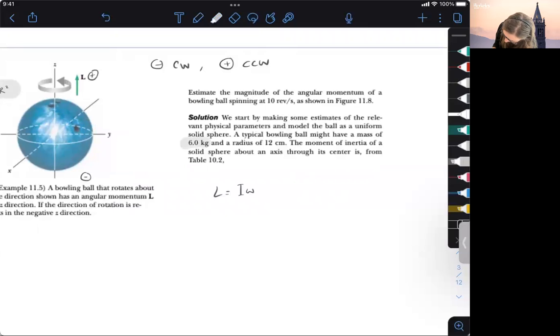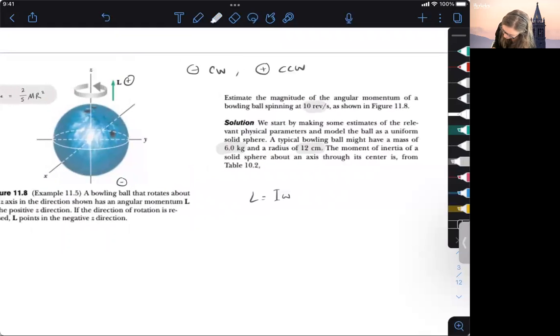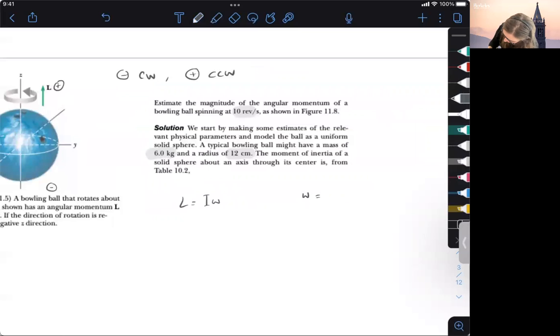This is basically just a plug and chug. We have a mass of the bowling ball. We have a radius of about 12 centimeters. It's spinning at about 10 revolutions per second here. So let's convert that to angular velocity. So our angular velocity, if we have 10 revolutions per second, and then we have 2 pi radians per revolution, W, which we are going to find in radians would be 20 pi radians per second.